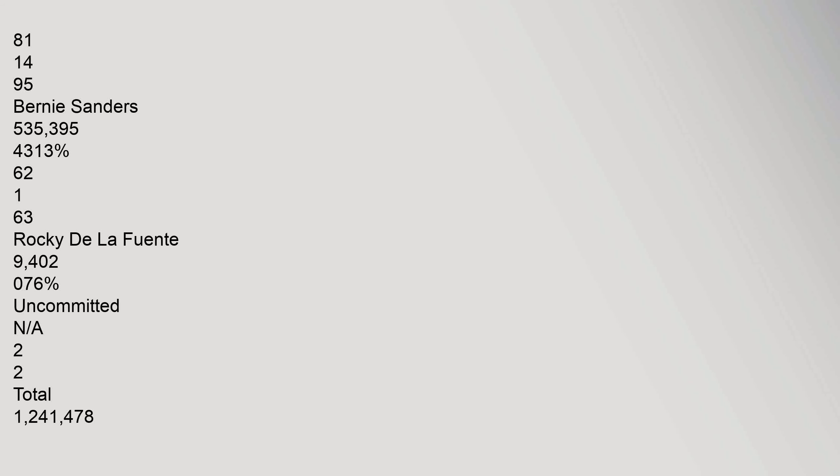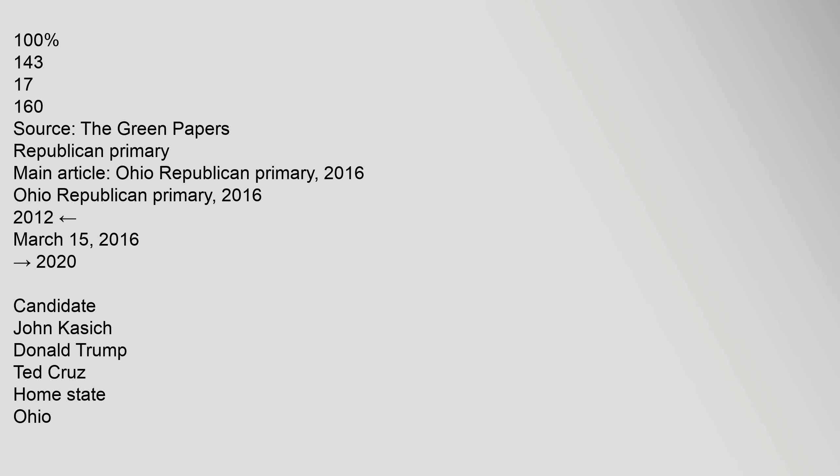Ohio Democratic Primary results, March 15, 2016: Hillary Clinton received 696,681 votes (56.12%) earning 81 pledged and 14 unpledged delegates for 95 total. Bernie Sanders received 535,395 votes (43.13%) earning 63 total delegates. Rocky De La Fuente received 9,402 votes (0.76%). Total votes cast: 1,241,478, with 143 pledged and 17 unpledged delegates, totaling 160.